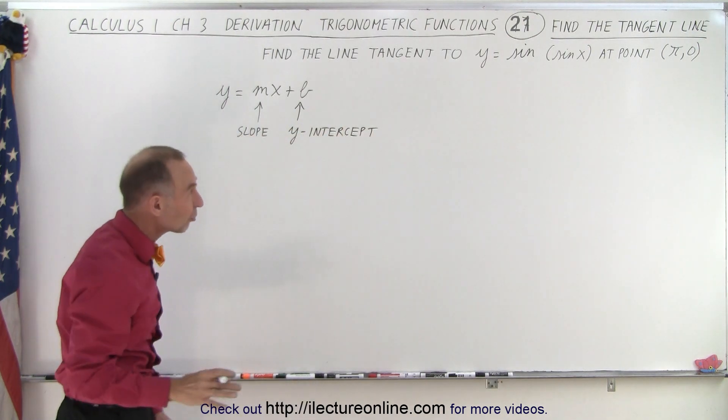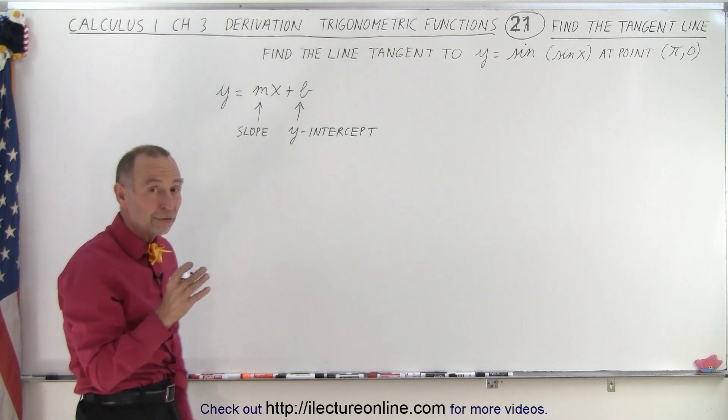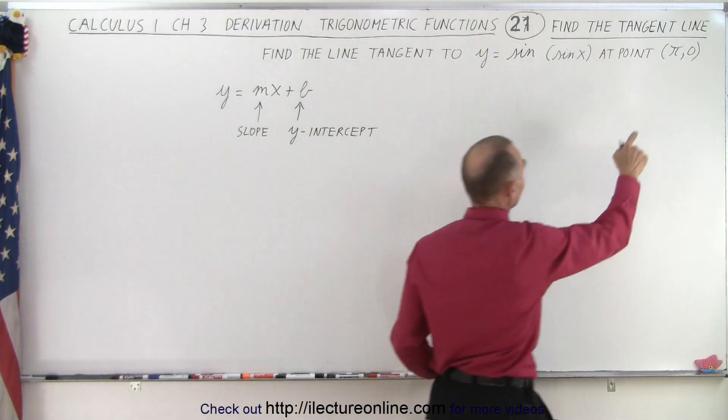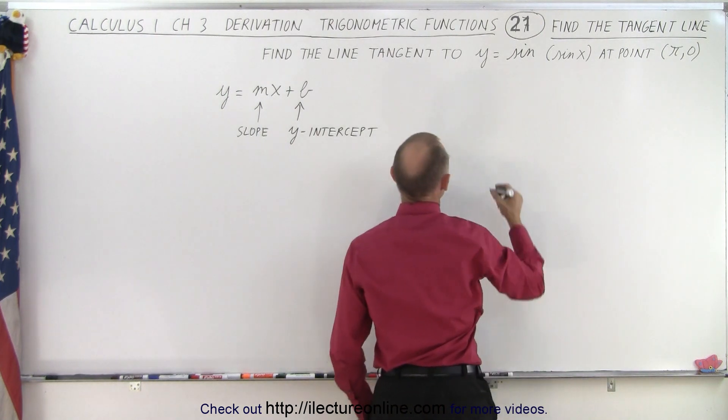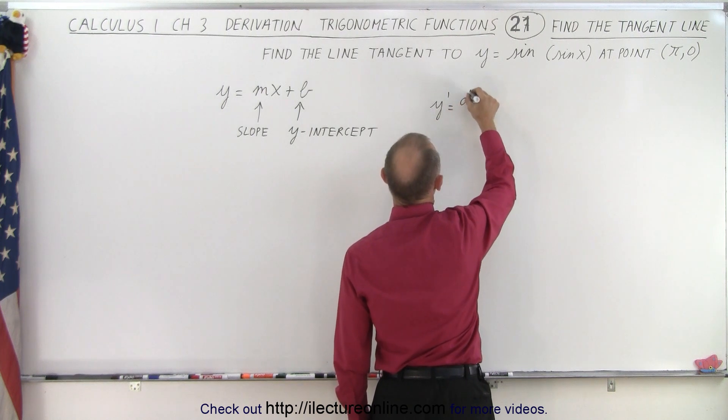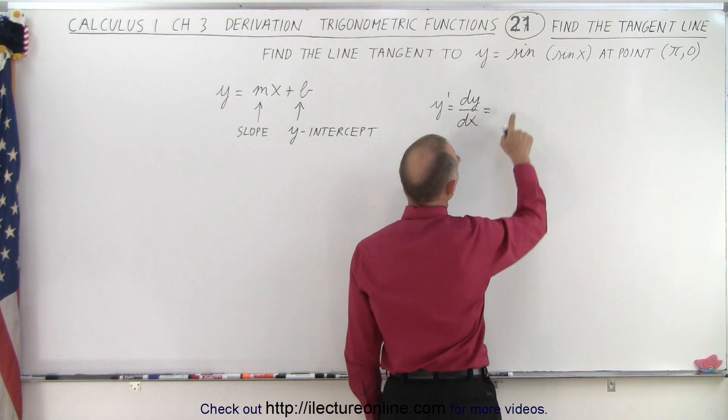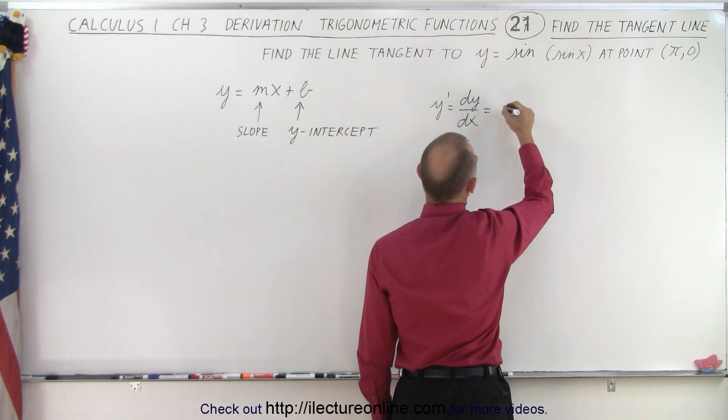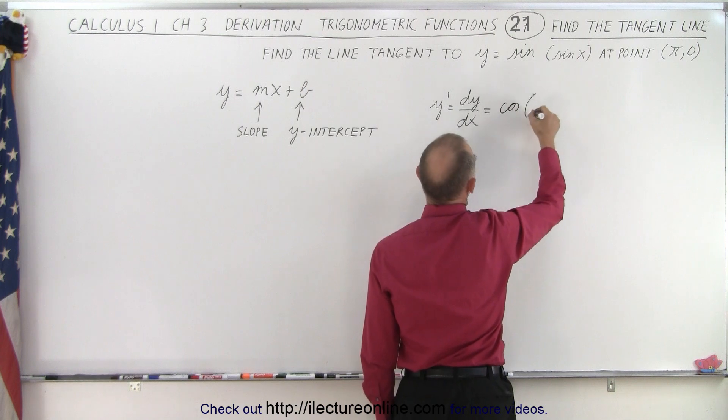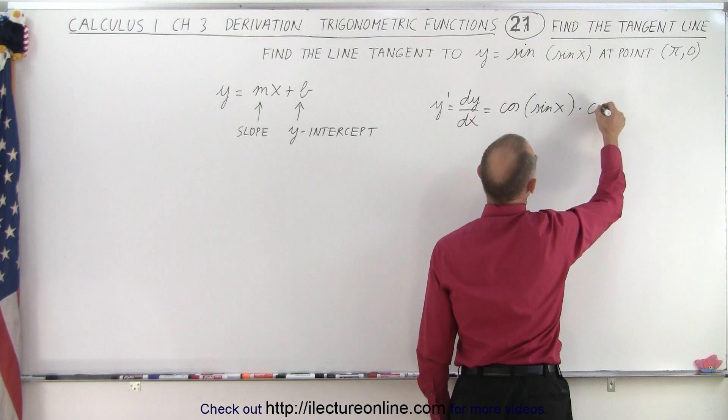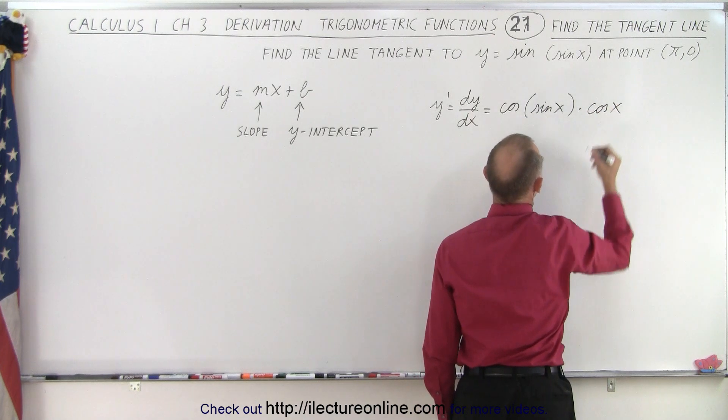To find the slope of the line, we're going to find the derivative of our function and then plug in the value for x at which we need to find the slope. So we get y prime, which is equal to dy/dx, which is equal to the derivative of our function with respect to x. So the derivative of the sine is the cosine. So we get the cosine of the sine of x times the derivative of the angle, which is times the cosine of x.